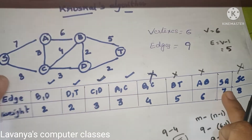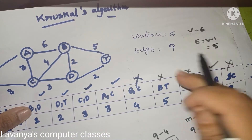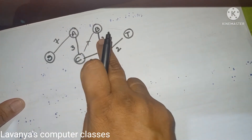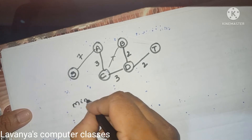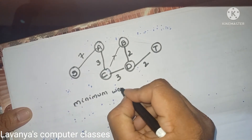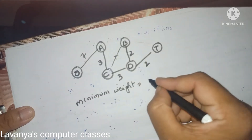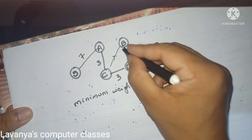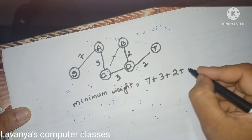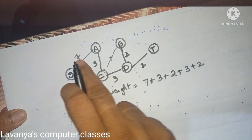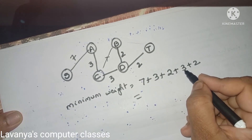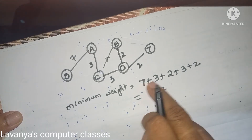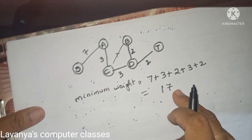Out of 9 edges, we have selected 5: B–D, D–T, C–D, A–C, and S–A. We already know we need 5 edges. This is the spanning tree according to Kruskal's algorithm. Now find the minimum weight: S–A is 7, A–C is 3, B–D is 2, C–D is 3, D–T is 2. Sum: 7 + 3 + 2 + 3 + 2 = 17. The total minimum weight is 17.